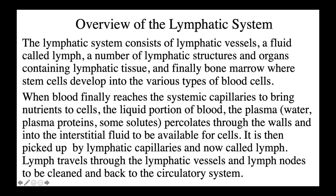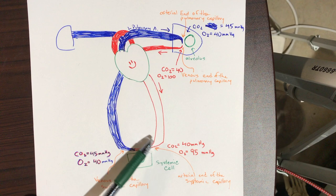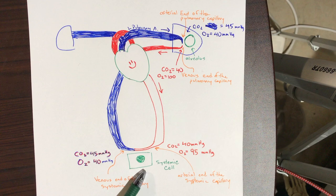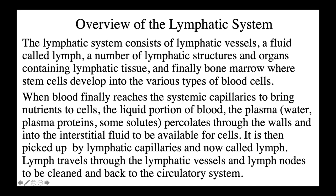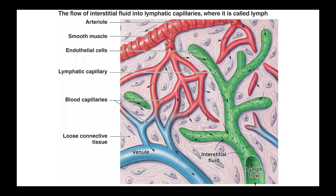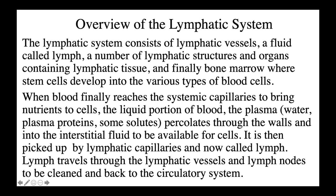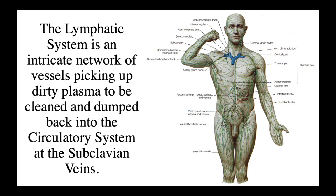When blood finally reaches the systemic capillaries — its destination to bring nutrients to cells — the liquid portion of blood, the plasma, like water, plasma proteins, and some solutes, percolates through the walls into the interstitial fluid. It is then picked up by lymphatic capillaries and now called lymph. Lymph travels through the lymphatic vessels and lymph nodes to be cleaned, and back to the circulatory system. The lymphatic system is an intricate network of vessels picking up dirty plasma to be cleaned and dumped back into the circulatory system at the subclavian veins.